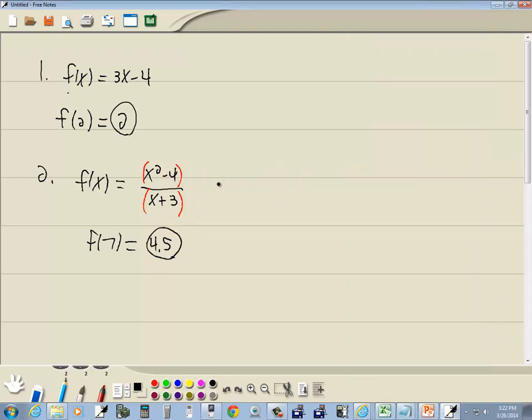If I did this by hand, if I plugged 7 in for x, I'd have 7 squared minus 4 over 7 plus 3.